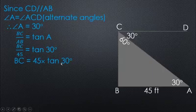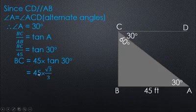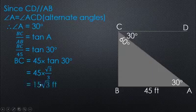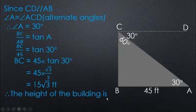45 is the tangent of 30 degrees. The tangent of 30 is approximately 1 over root 3. So BC equals 45 divided by tangent of 30, which gives us 15.3 feet. The height of the building is 15.3 feet.